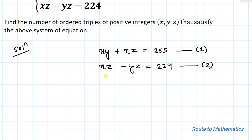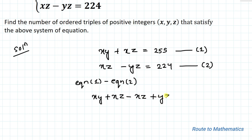In the next step, let's subtract equation 2 from equation 1. So subtracting equation 2 from equation 1, we have x·y + x·z - x·z + y·z = 31. Here the positive x·z and negative x·z cancel out, giving us x·y + y·z = 31.